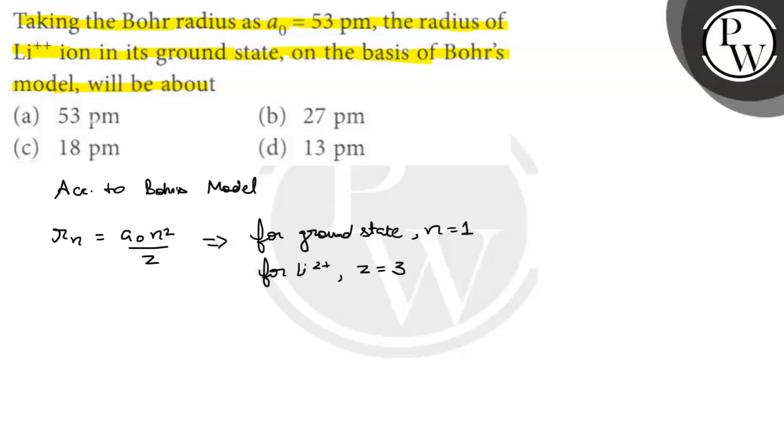So if we put values in the formula, and A₀ is given as 53 picometer, then if we want to find rₙ, it will be 53 picometer times 1 divided by 3.